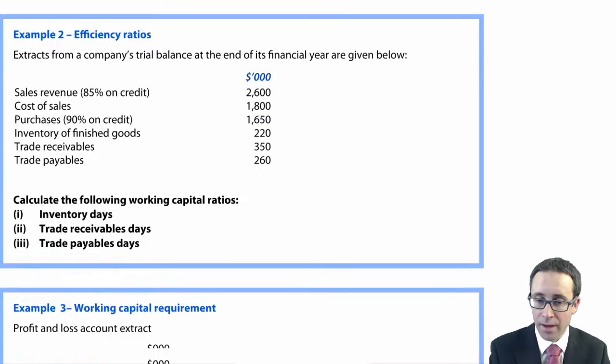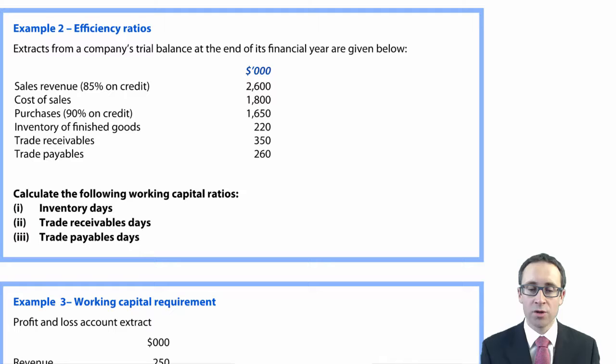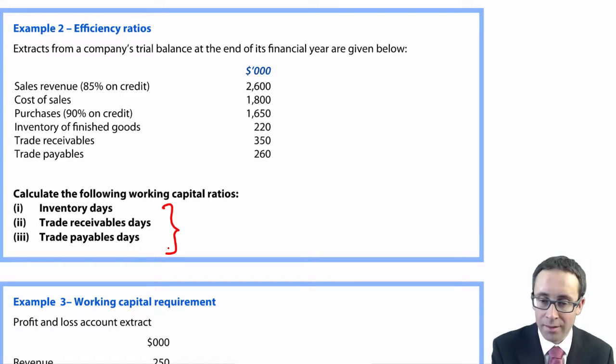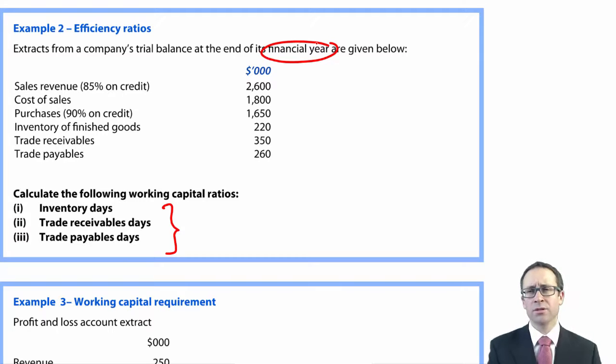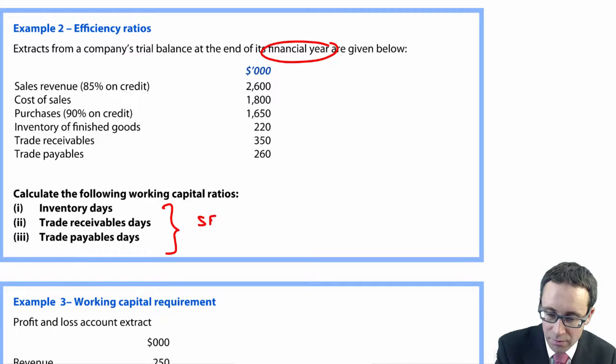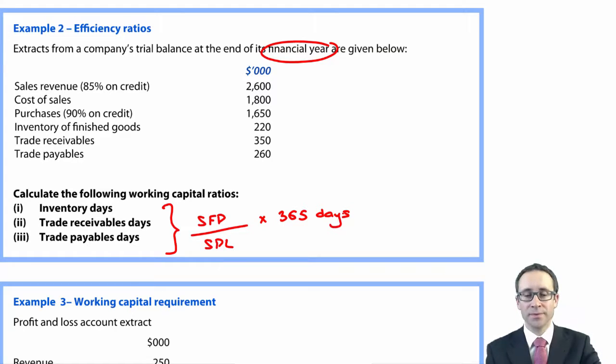If we go on and have a look at the second example, which is all to do with your efficiency ratios - that's looking at inventory days, receivable days and payable days. We're looking at extracts from the trial balance. It's for the financial year - not six months, not three months quarterly, it's a full year.